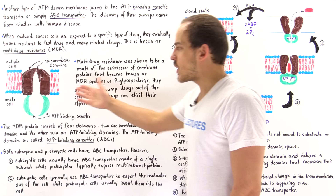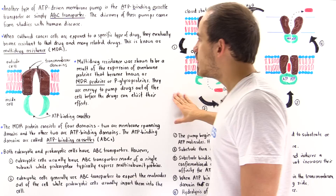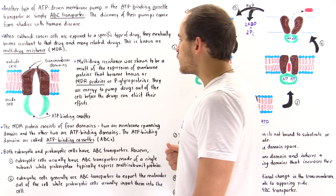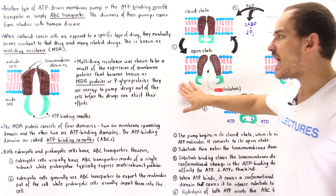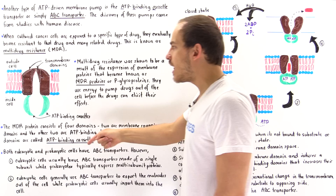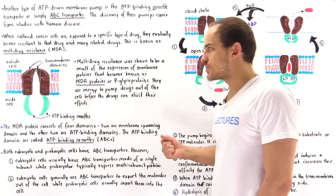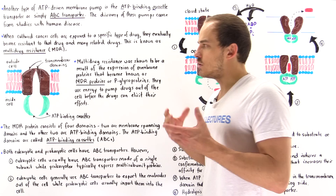These proteins became known as MDR proteins, or simply P-glycoproteins — glycoproteins because they have sugar components. Multi-drug resistance was shown to be a result of the expression of these membrane proteins, which use energy to pump drugs out of the cell before the drugs can actually carry out or elicit their effects.